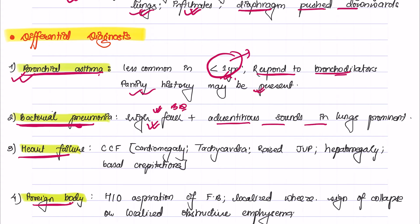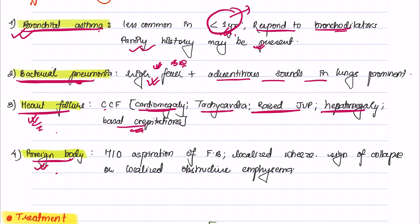Heart failure is another differential where the patient will have cardiomegaly, tachycardia, raised jugular venous pressure, hepatomegaly, and basal crepitations will be heard. Foreign body aspiration may also be a cause where there will be localized wheeze, sign of collapse, or localized obstructive emphysema.